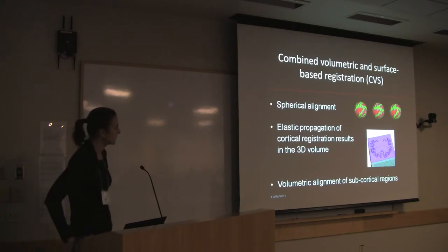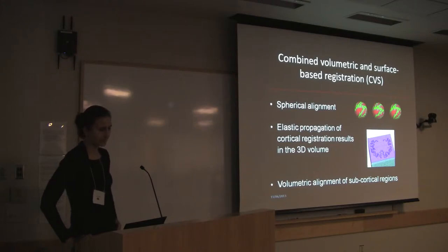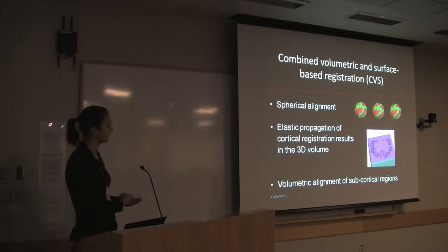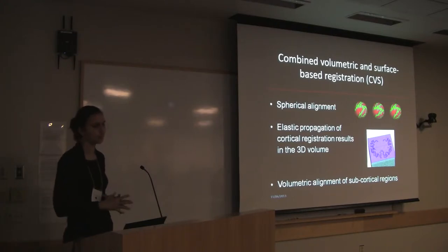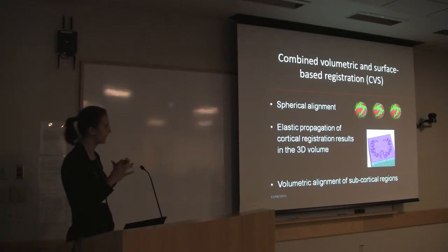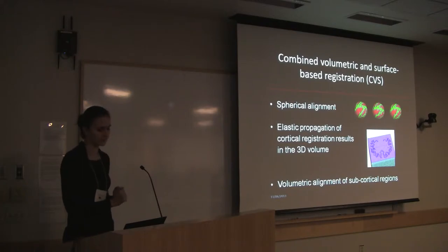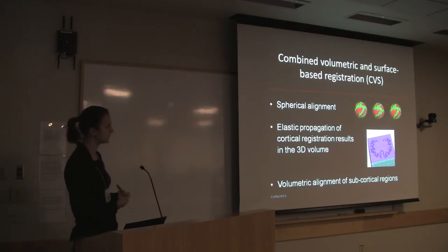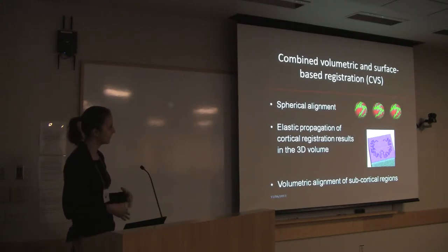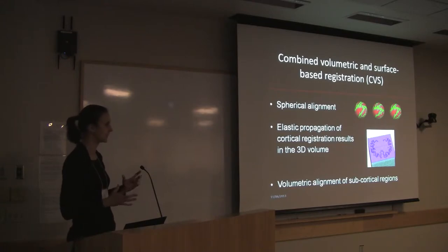The solution I'm presenting today is called the combined volumetric and surface-based method, or CVS-based method. It has three components. One component is the spherical alignment — we want to bring the cortical areas as close to register as possible, so we use this as an initialization step. Given that this alignment takes place in the 2D domain, we need a step that propagates this solution from the 2D domain to the 3D domain. And then as a last component, we do a volumetric alignment so that the subcortical areas are just as well aligned as the cortical areas.